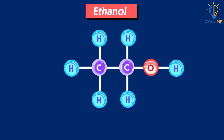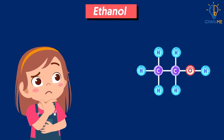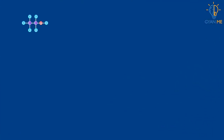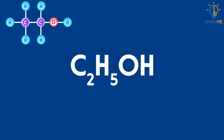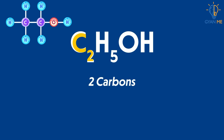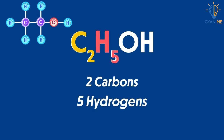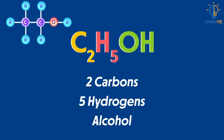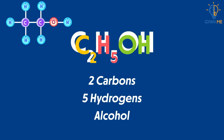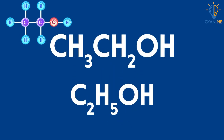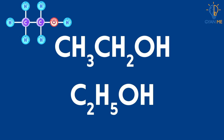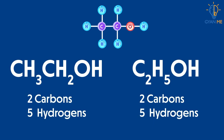What's the chemical formula of ethanol? It is a saturated hydrocarbon with two carbons and five hydrogens and alcohol as the functional group, or it can also be written as CH₃CH₂OH. Both representations have the same number of atoms of carbon, hydrogen, and oxygen — just written differently — so both are correct.